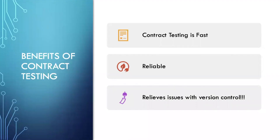So what are some of the benefits of contract testing? Contract testing is fast, it's reliable, and it relieves issues with version control. For example, if we have changes to our request model or our response model, with contract testing you can go back to versions that were working previously and verify them against the current working version.